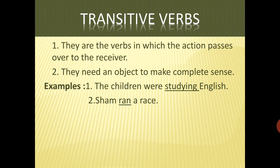Now, talking about transitive verbs. In transitive verbs there will be objects, because the action passes over to the receiver. The object makes it complete sense. For example, 'the children were studying English' — now I have told you they are studying English, so English is the object. Hence 'studying' is a transitive verb. Similarly, 'Sham ran a race' — now you know that he ran a race, so the object is known. That's why 'ran' is a transitive verb here, because you know the object.